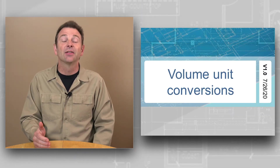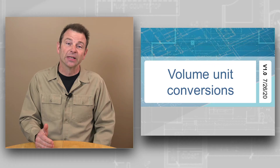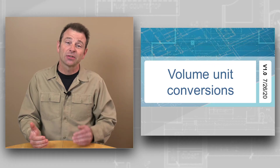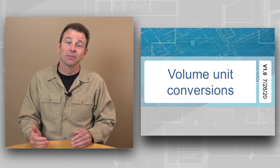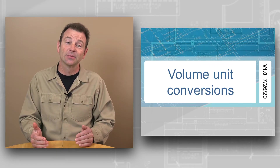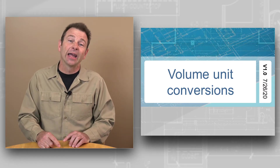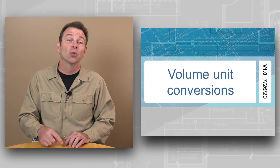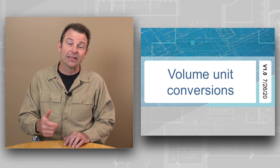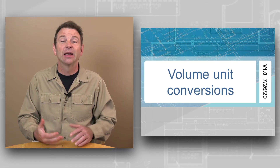Let's add another dimension to our units — now we're going to talk about volume. We came from area, and area was length times width. Let's add a third dimension, which will be our height. So now we have length times width times height — now we're talking about volume.